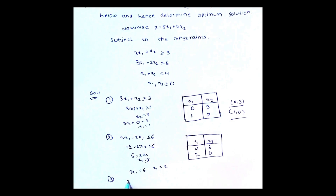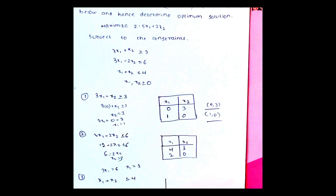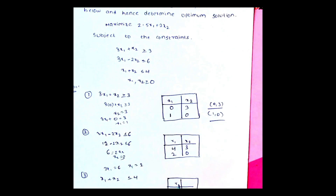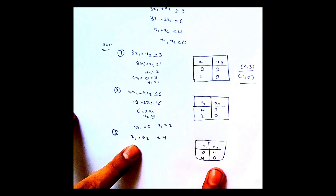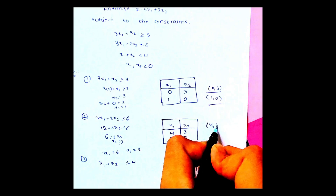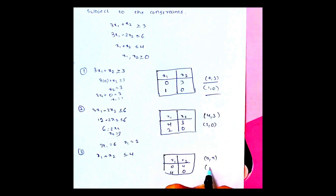Let me go to the third equation: x1 plus x2 less than or equal to 4. It is very simple. By inspection, if x1 is 0 then x2 is 4, and if x2 is 0 then x1 is 4. So the two points are (0, 4) and (4, 0).